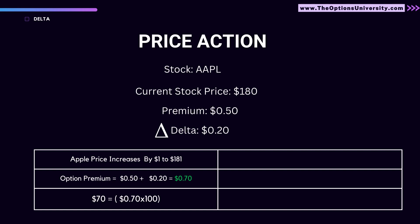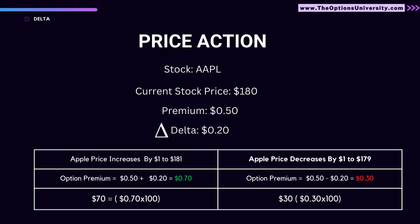Conversely, if Apple decreases by a dollar to $179, the option premium would be $0.50 minus $0.20, which equals $0.30, or $30 per contract. That's how delta drives the option premium's price movement.